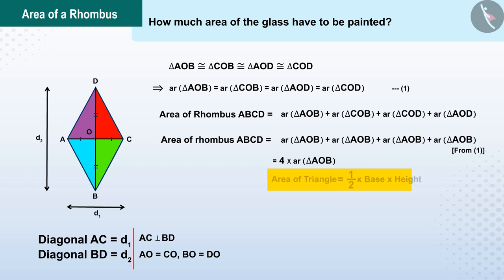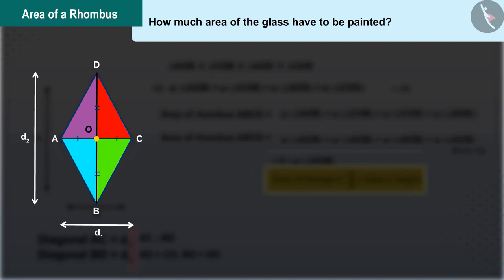The formula of the area of a triangle is 1/2 times the base times the height. Let us now find the area of triangle AOB. The base of triangle AOB is AO and height BO. Thus, the area of triangle AOB is half the length of AO times the length of BO.